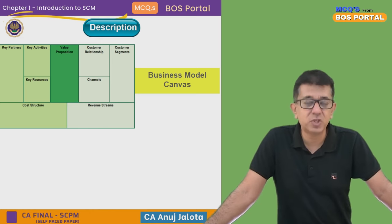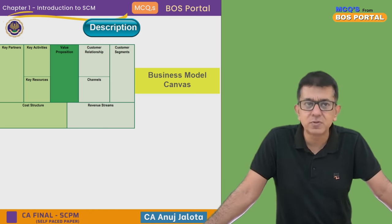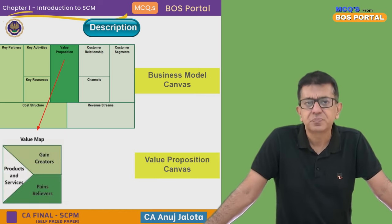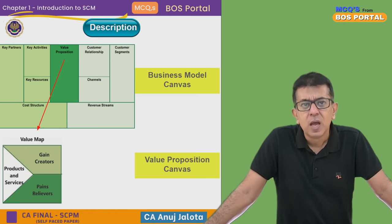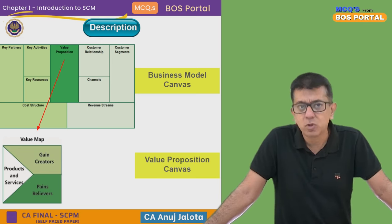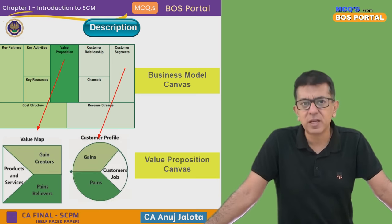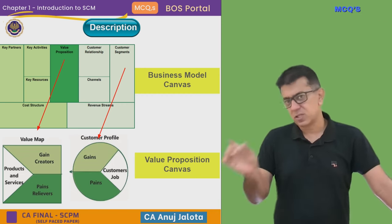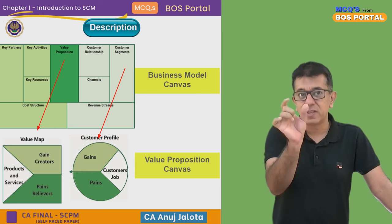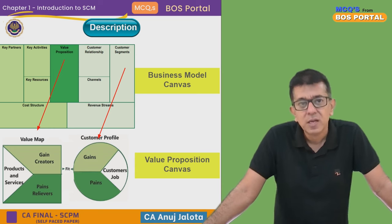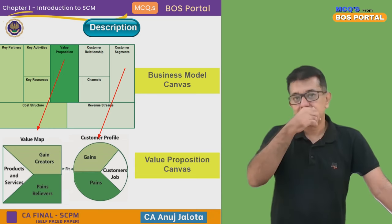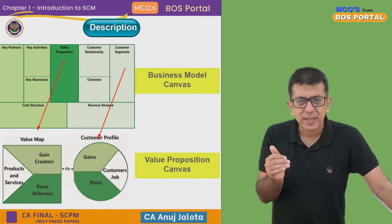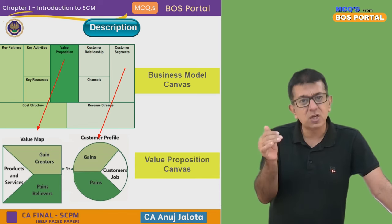Out of these nine elements, two were explained further through the value proposition canvas. The first is value proposition, which is explained further as the value map. The second is customer segment, which is detailed further as the customer profile. A business will be doing well if the customer profile matches with the value map — that is where the term 'perfect fit' comes in. This lower part is called the value proposition canvas.